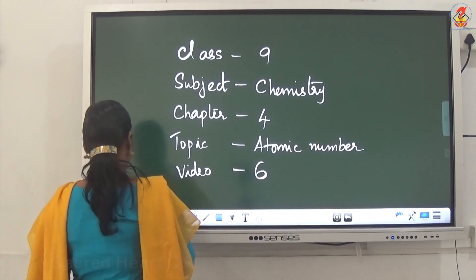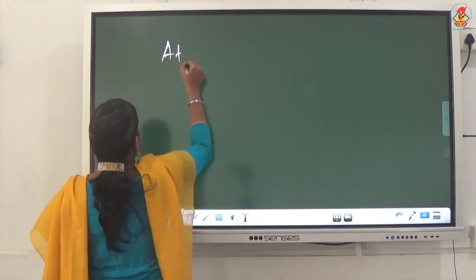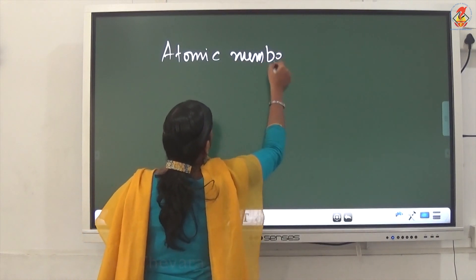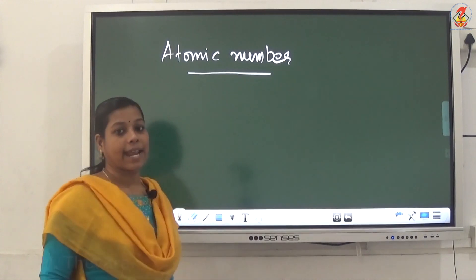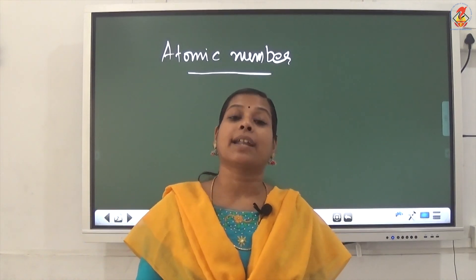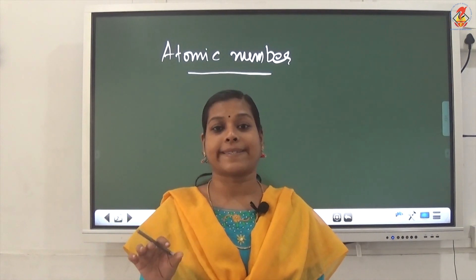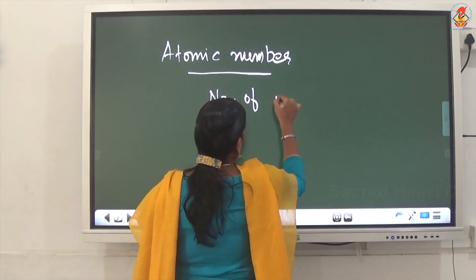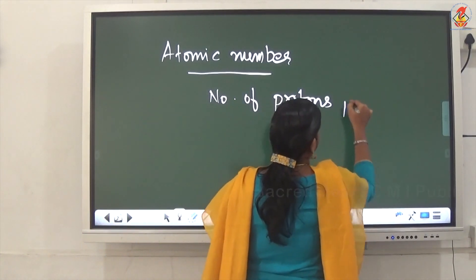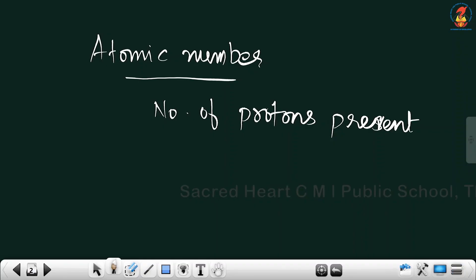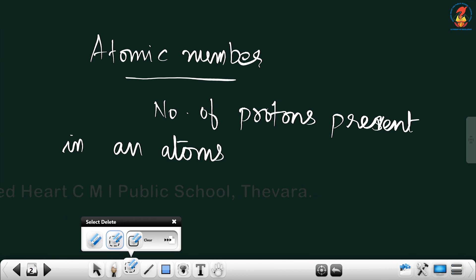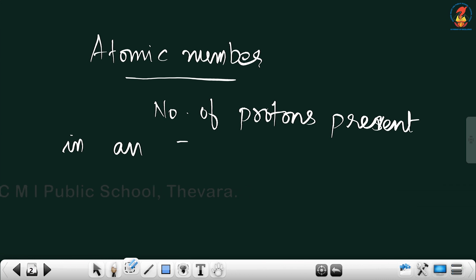What do you mean by atomic number? Atomic number is the number of protons present in an atom. Number of protons present in an atom is known as atomic number.